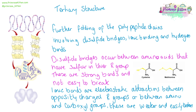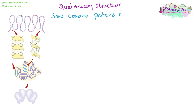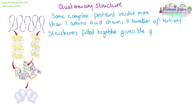The tertiary structure is still made up from only one single polypeptide chain, but now the folding on it is very, very complicated. For some proteins, this is where it ends, and their tertiary structure will be their final overall structure. However, some complex proteins will have a quaternary structure involving more than one amino acid chain. A number of tertiary structures will be fitted together to give the final quaternary structure.